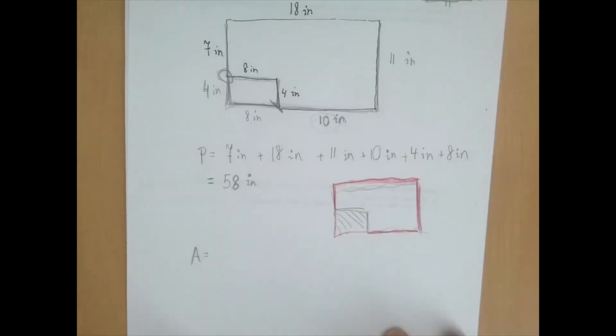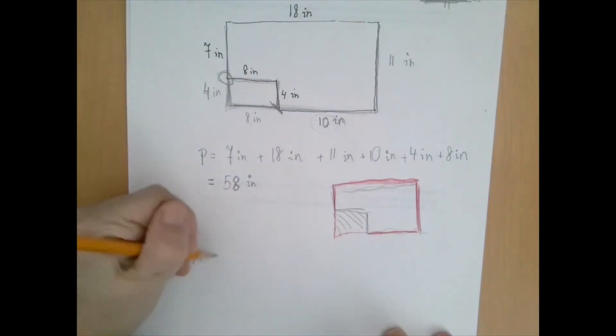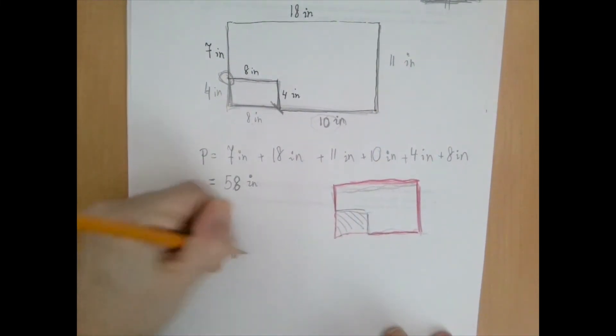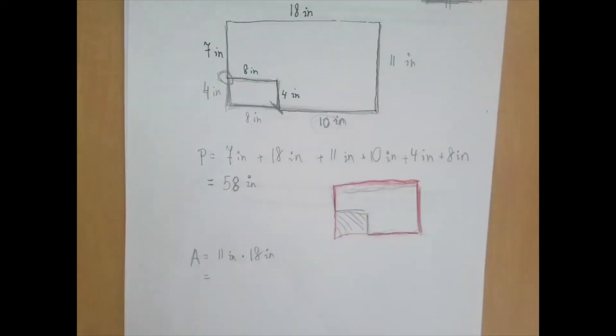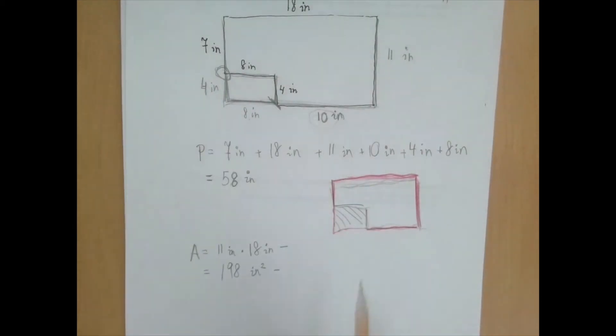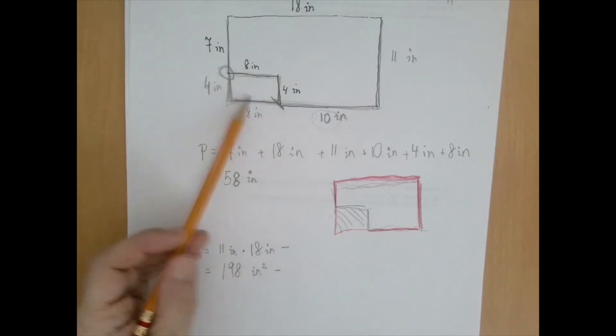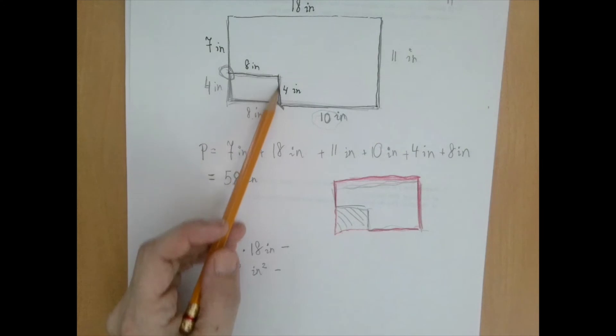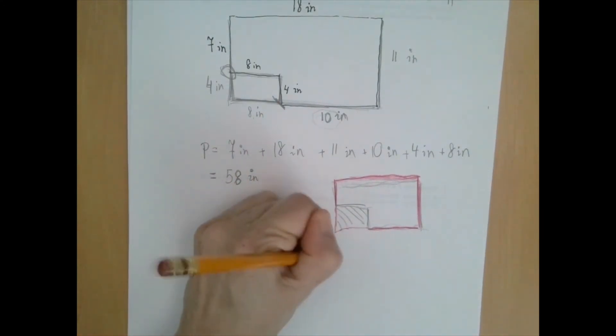The big area would be, well, the whole rectangle sides are 11 and 18. So it would be 11 inches times 18 inches, which is 198 square inches minus. And so from that, it's like someone bit off a corner. We're going to subtract a smaller area, the area of rectangle that is 8 inches by 4 inches. So that's 8 inches by 4 inches, which is 32 square inches.